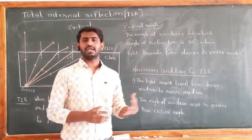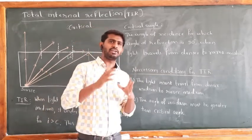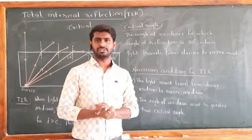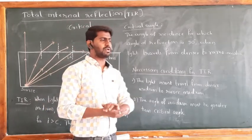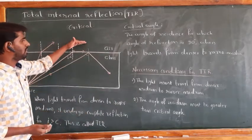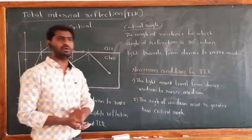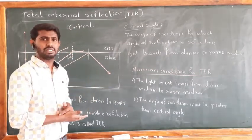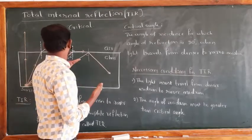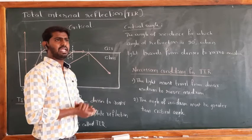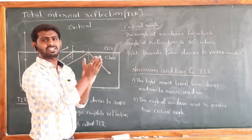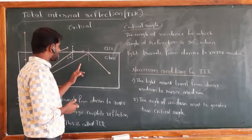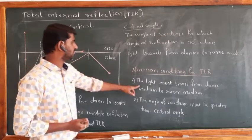What are the conditions to get TIR? There are two important conditions. The first condition is: light must travel from a denser medium to a rarer medium. While passing from denser to rarer, it bends away from the normal, so there is a chance of reflection back.